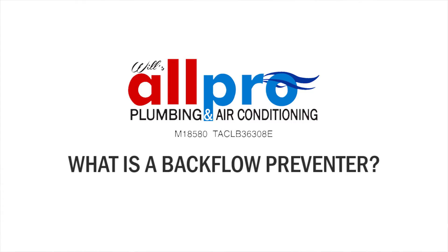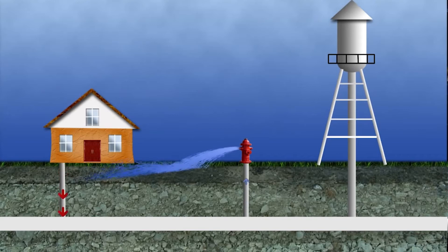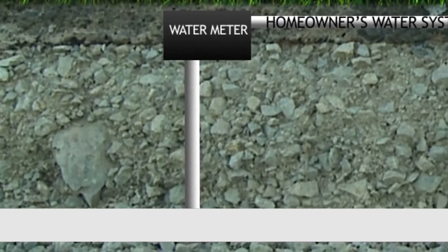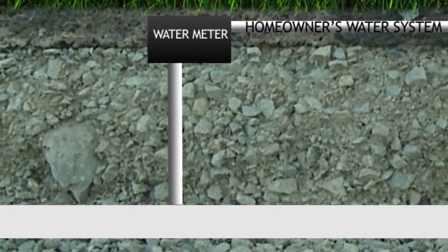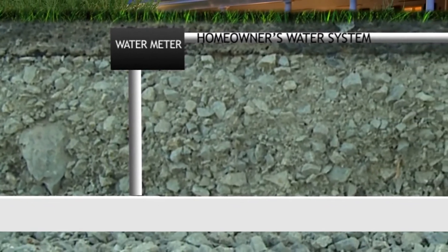What is backflow and why do I need to install a backflow preventer? Backflow is the reversal of normal water flow caused by a sudden change in water pressure. Backflow could contaminate the public water supply whenever a cross connection exists. A cross connection is a link between a potable water system and a non-potable water system.